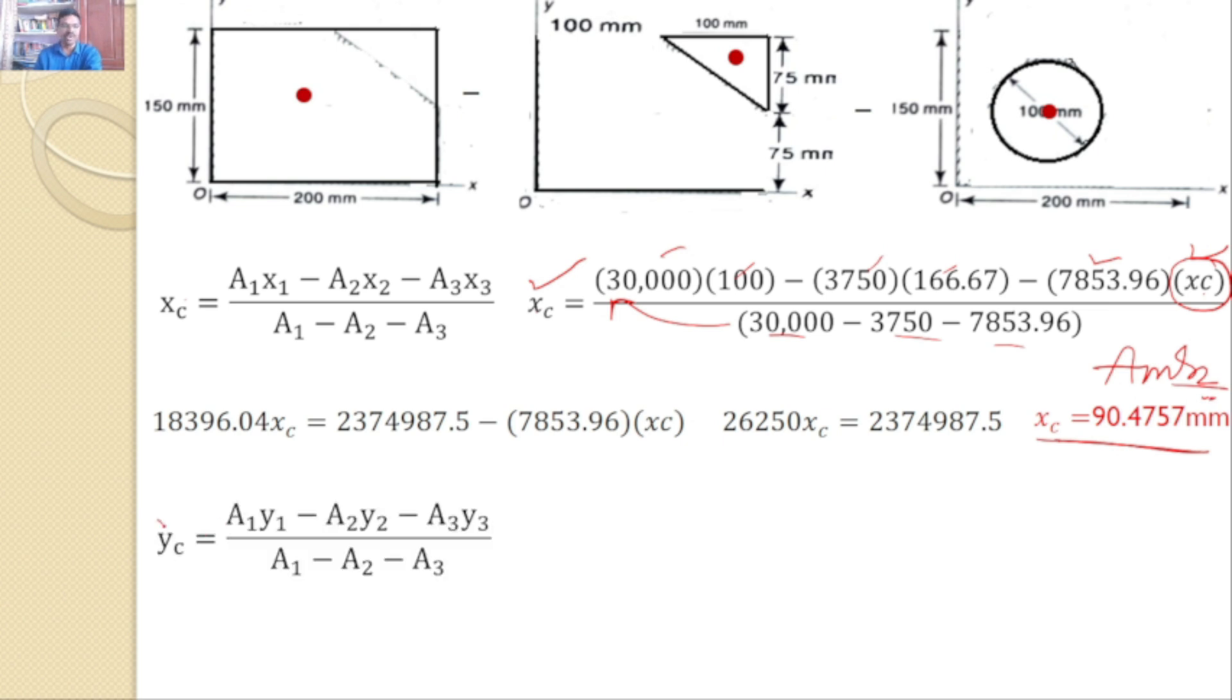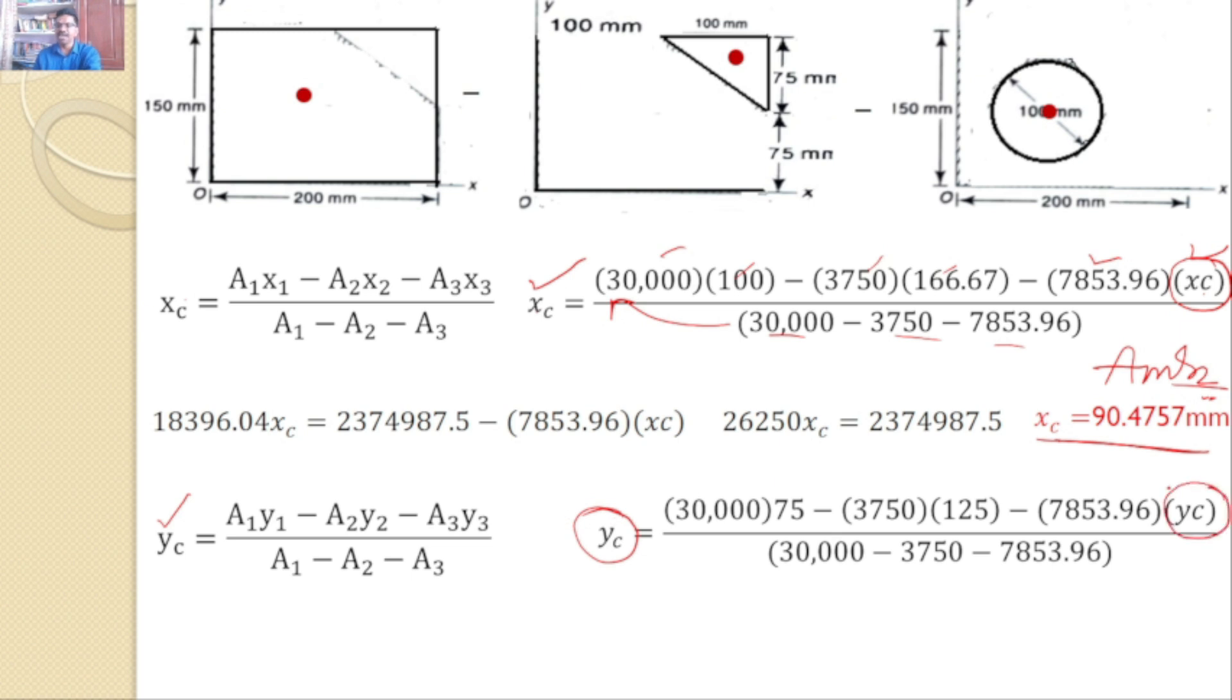Similarly, I will substitute in the formula yc equals A1·y1 minus A2·y2 minus A3·y3, divided by A1 minus A2 minus A3. And after substituting here, yc, that is the centroid for the composite area, is nothing but the centroid for the circle.